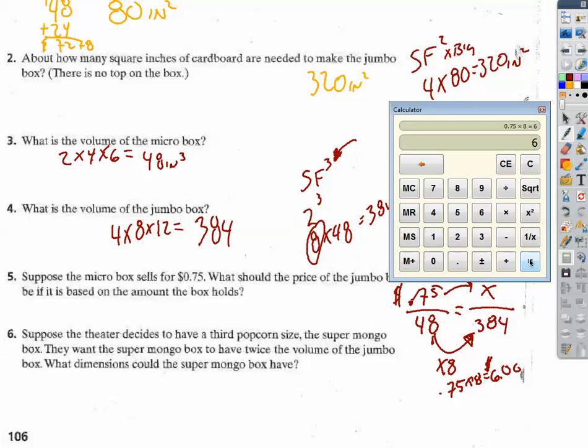Suppose the theater decides to have a third popcorn, the supermongo box, and they want the supermongo box to have twice the volume of the jumbo box. So what would the dimensions be? So, if they want it to be twice, here's the tricky thing.